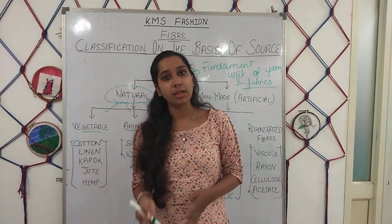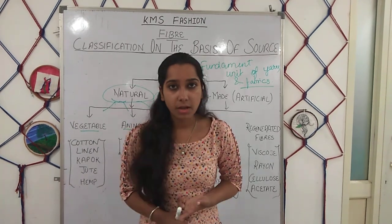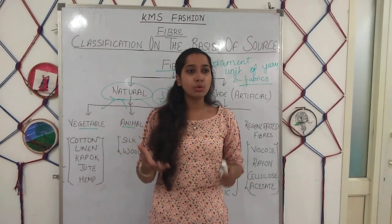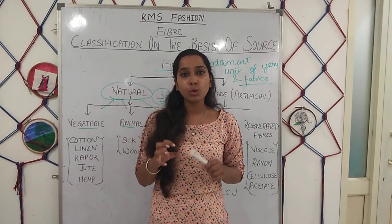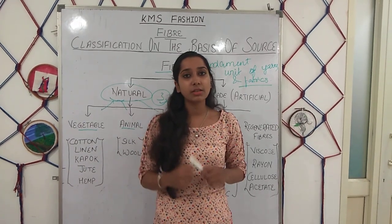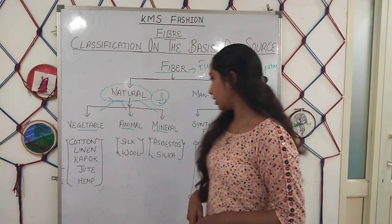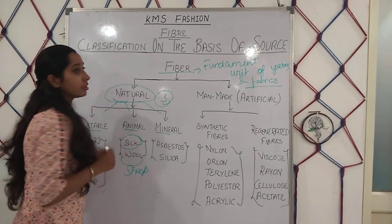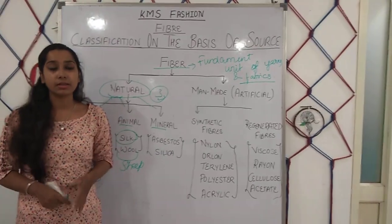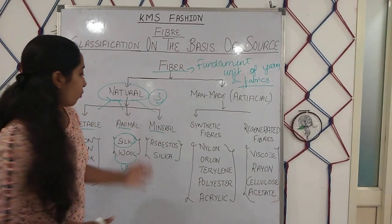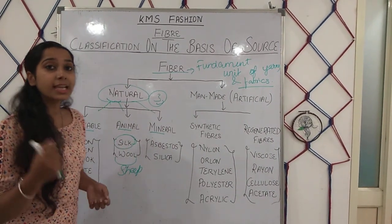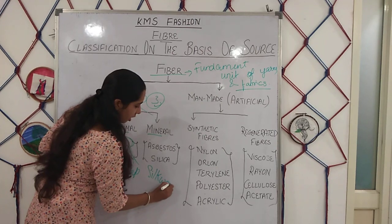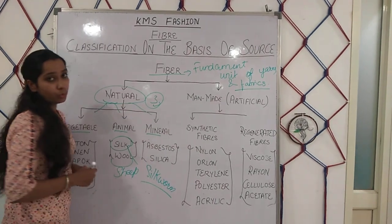Other is animal fibers — fibers we get from animals. Animals like sheep: you have all seen sheep in day-to-day life. They have wool that we use in clothes. And silk — the costliest, most luxurious and delicate fabric. We get silk from the silkworm.